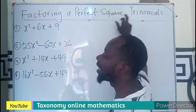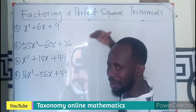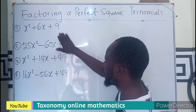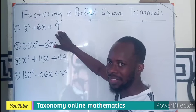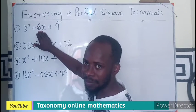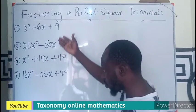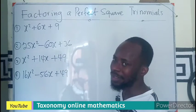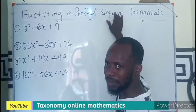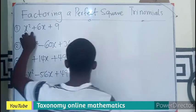We have done how to factorize a trinomial by first looking out for factors of the constant that add to give you the coefficient of x. We have done that. So we can do the same thing to this, but we want to see that some questions are perfect square. So if a trinomial or a quadratic is perfect square, it means...